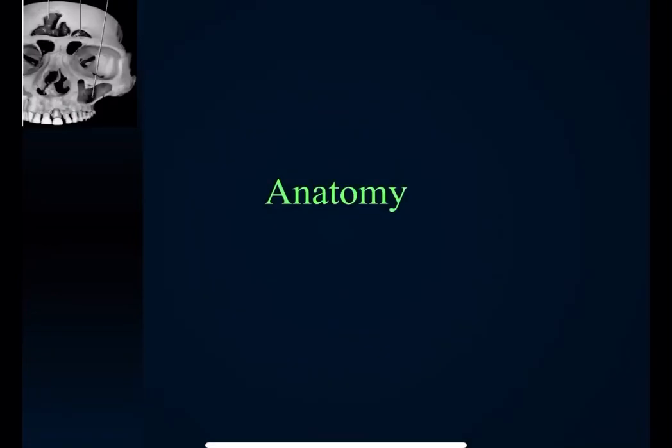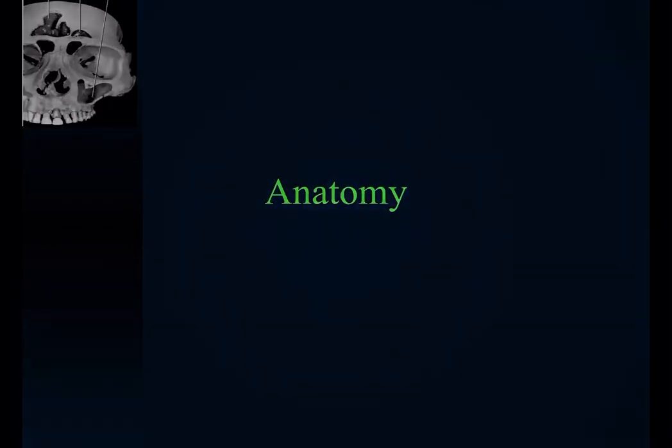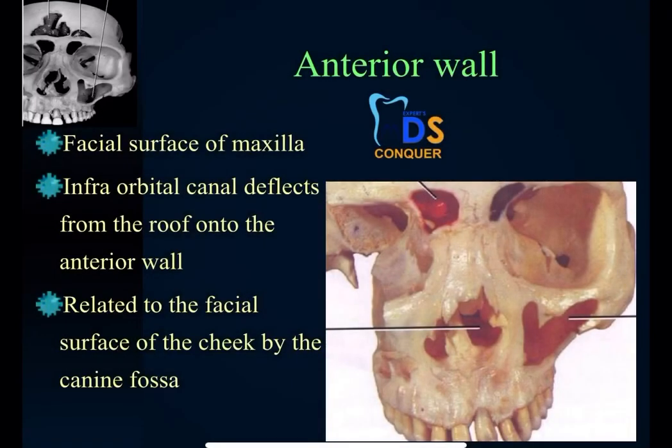Coming to the anatomy: you can draw a diagram showing the nasal cavity as well as the paired sinuses in pyramid shape. The anterior wall is the facial surface of the maxilla; the infraorbital canal deflects the roof onto the anterior wall, and it is related to the facial surface of the cheek by the canine fossa as seen in the diagram.